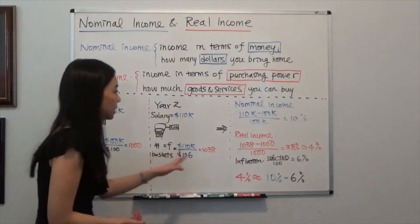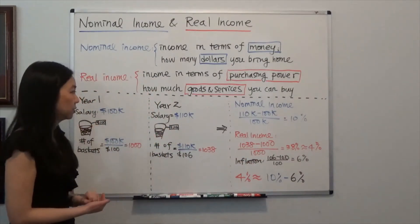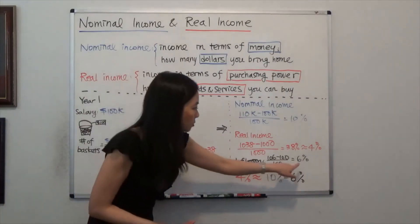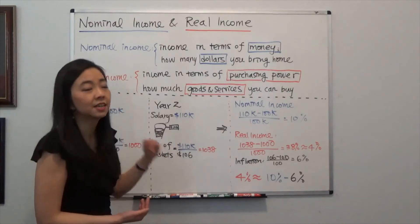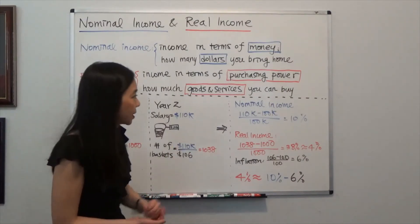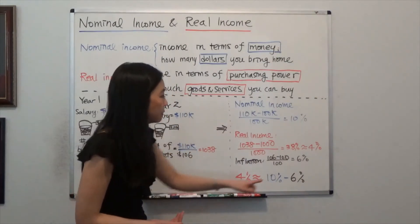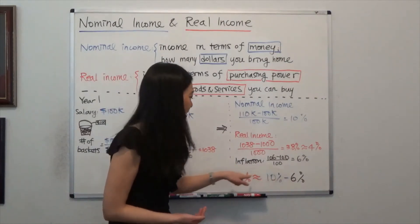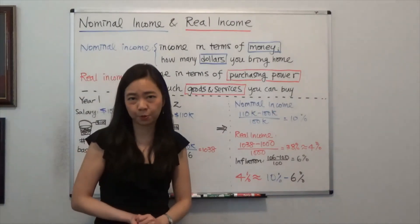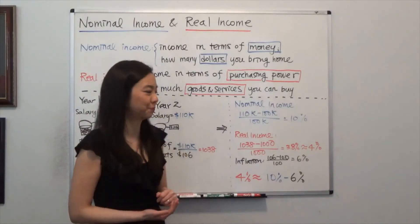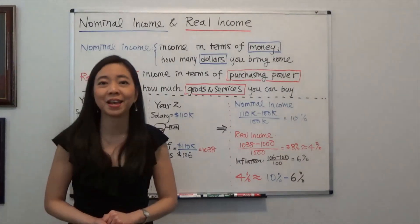What about the inflation rate? The inflation rate is 6% because our basket price increased from $100 to $106. So my real income increase is actually equal to the nominal income increase, 10%, minus the inflation rate, 6%, which gives us a picture of how many more baskets we can bring home. This is the concept of nominal income and real income — I hope this helps!